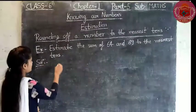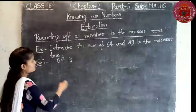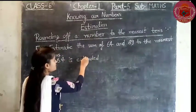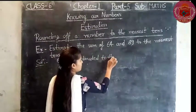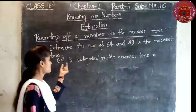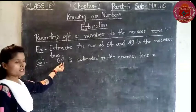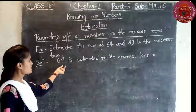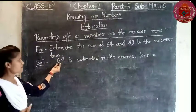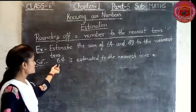So the solution is here. We estimate 64 and 89 one by one and then find the required sum. First, 64 is estimated to the nearest ten. We consider the ones place, which is 4. Since 4 is less than 5, we replace the ones digit by 0 and keep the other digits. So 64 is estimated to the nearest ten as 60.